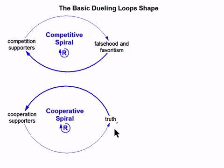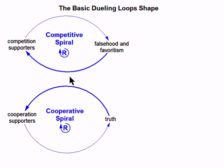Now we've got two very, very simple loops. The big thing to notice about these loops is in this one we have truth, and in this one we have falsehood and favoritism. The supporters are about the same — very generic. It's just the type of supporter that happens to be trapped in this loop by these politicians, or fortunately in this loop by these politicians.